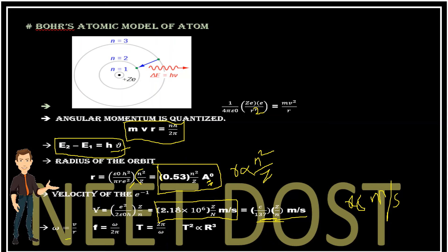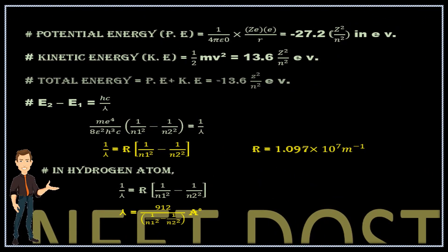Remember: ω = v/r or v = rω. From this, frequency f = ω/2π and time period T = 2π/ω — this appears many times in physics. Solving these three equations gives T² ∝ r³, which is a very important result that also appears in gravitation. Potential energy PE = (1/4πε₀)(ze²/r) = −27.2 z²/n² in electron volts.